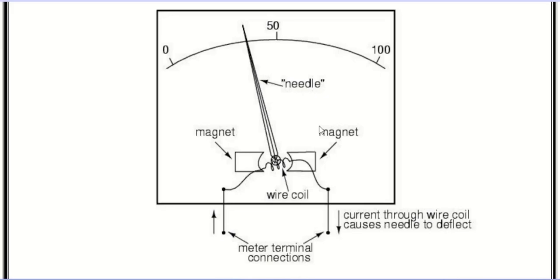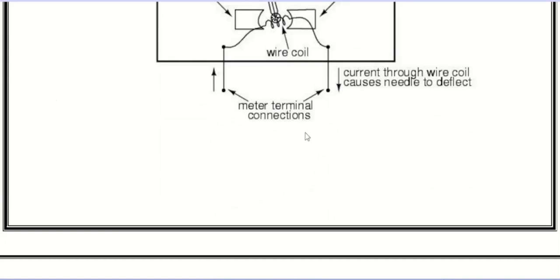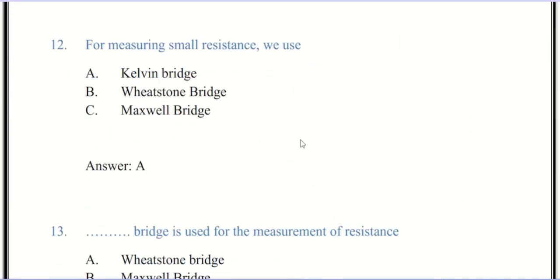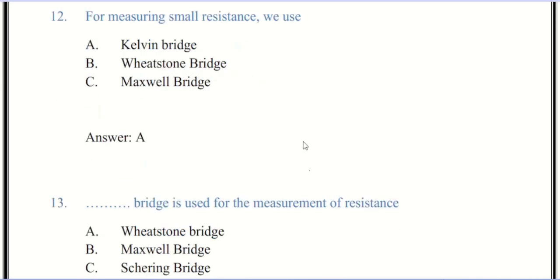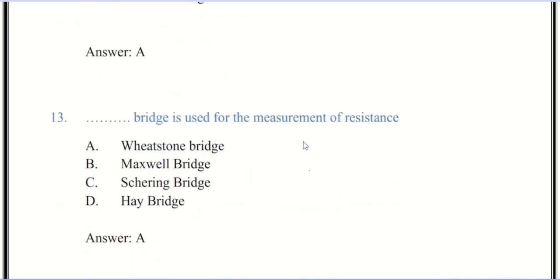Now we come to question number 12. For measuring small resistance we use Kelvin bridge, the correct answer is A. Kelvin bridge is used for measuring the unknown resistance having a value less than one ohm. It is modified from the Wheatstone bridge. While measuring very low resistance, contact and lead resistance cause significant error, so Kelvin bridge is used for measurement of low resistance.